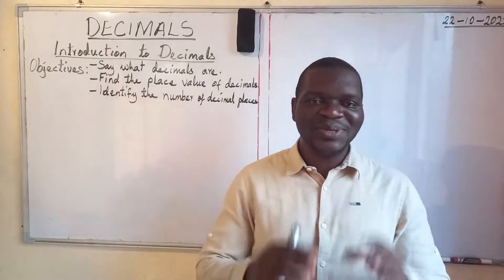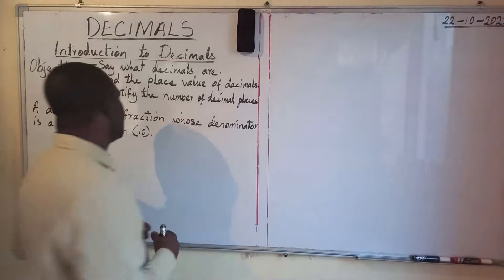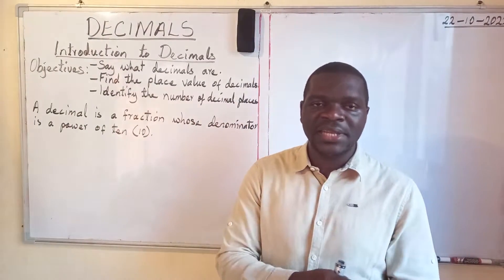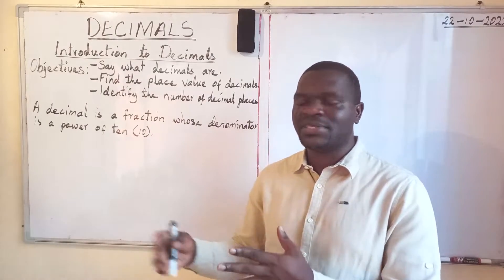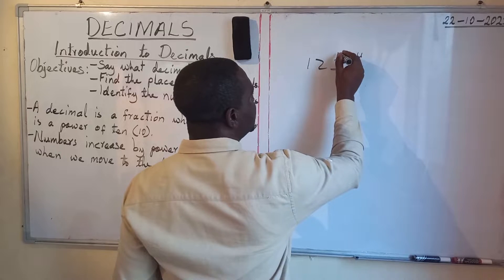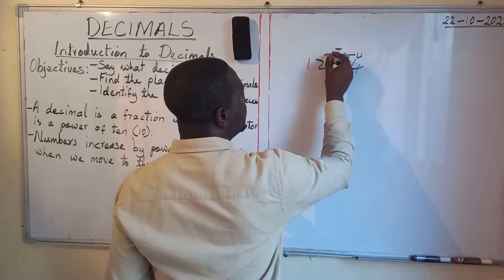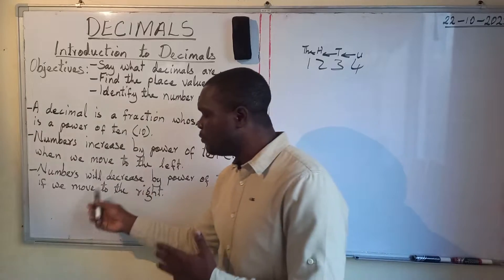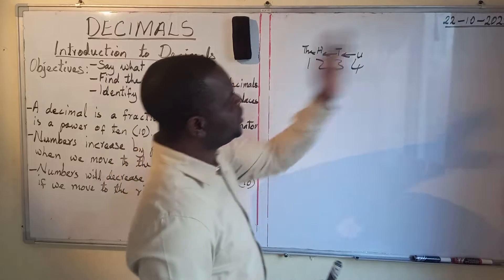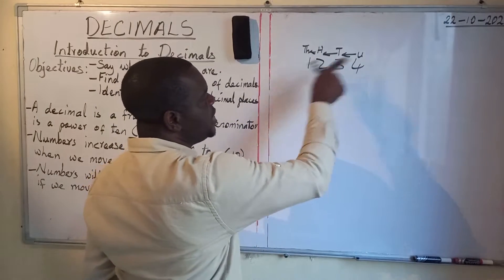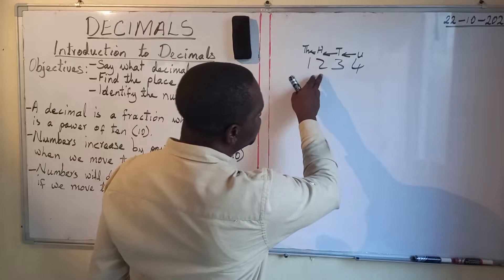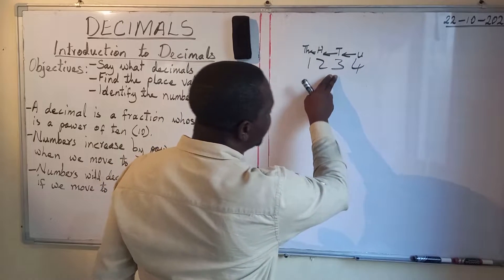We are going to add, subtract, multiply, and divide decimals. For all this to be successful, you have to pay attention to the basics. By the end of the lesson today, you should be able to say what a decimal is, find the place value of decimals, and identify the number of decimal places in a number.